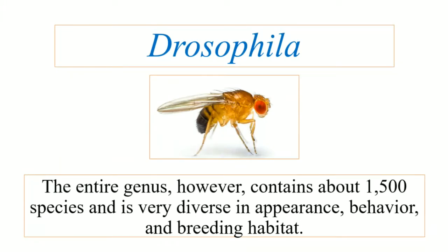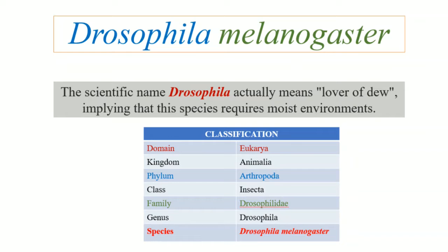In this video we will talk about the classification and life cycle of Drosophila melanogaster. Drosophila melanogaster belongs to genus Drosophila, which contains about 1500 species, all with diverse appearance, behavior, and breeding habits. The word drosophila means 'lover of the dew,' meaning species belonging to this genus prefer moist habitats.